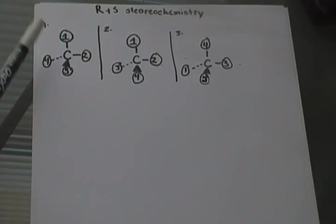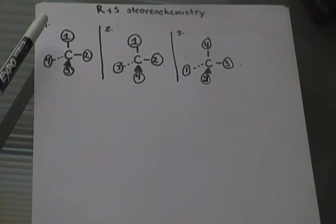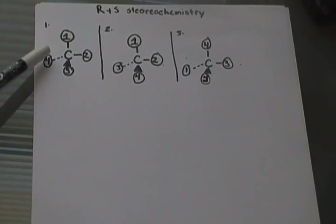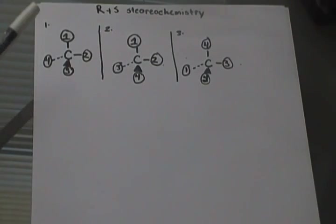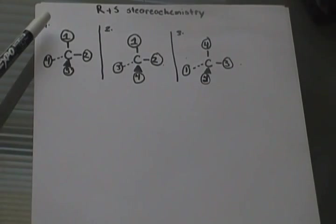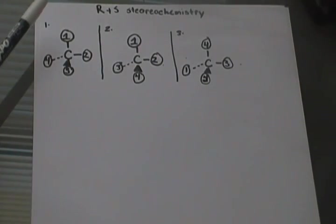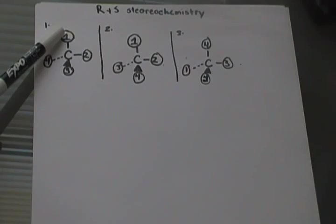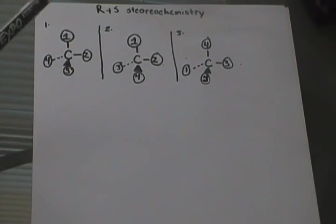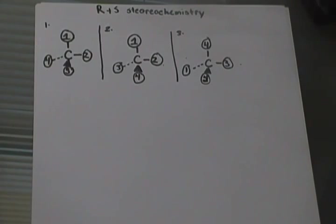I already have these molecules out and the groups labeled on them. In this first one, the fourth group is going into the page. Whenever that occurs, what you do is make a curved line from your first priority group going through your second to your third. And depending on the direction of that — if it's clockwise, it'll be R, and if it's counterclockwise, it will be S.